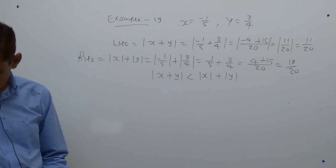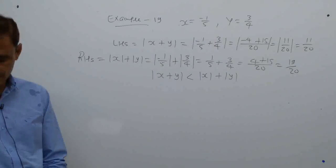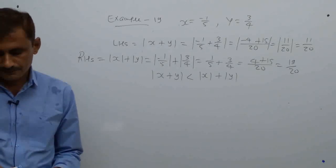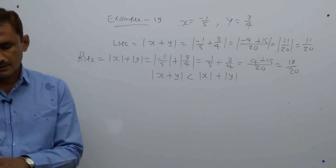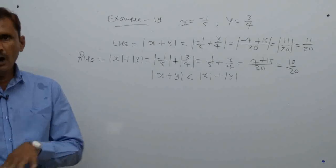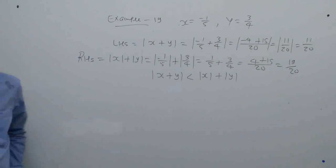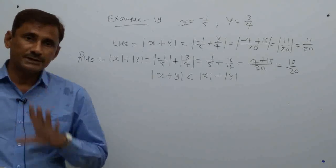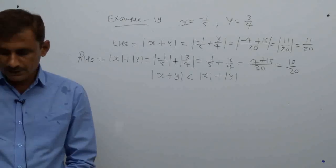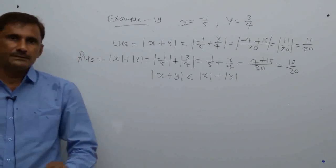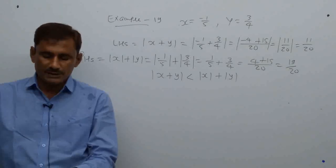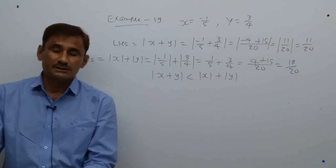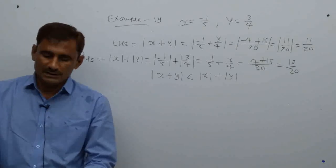The answer is B — less than. Examples 20 and 21 are similar types, so students should try them on their own. Property 2 with absolute value has already been explained. Rather than solving the same type of sum repeatedly, you should practice examples 20 and 21 yourselves.